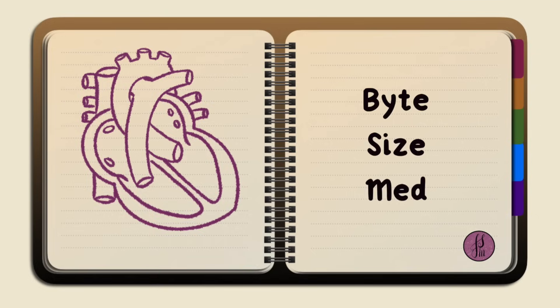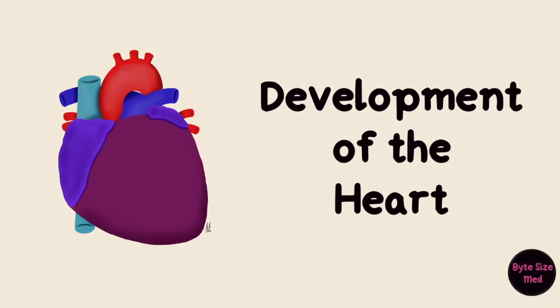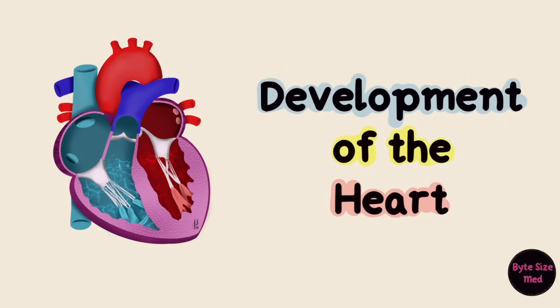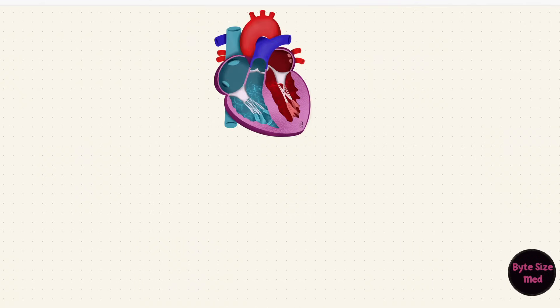Hello, welcome to Bite Size Med. This video is on the development of the heart, and we're going to look at how the atria develop and how they separate. First, let's look at some of the structures in the atria so we can see what parts need to develop, and then we'll go back and see how that happens.